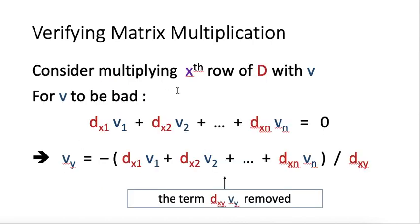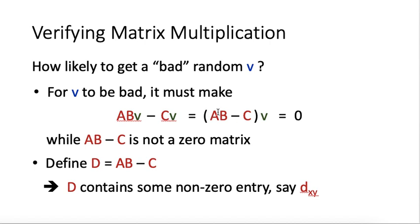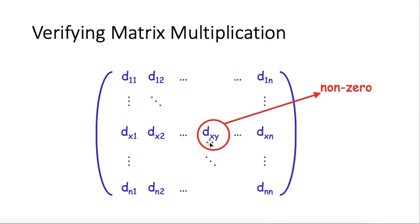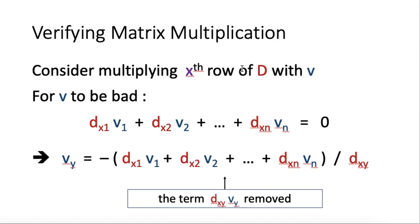Let us consider multiplying the X-row of D with V. We are looking at D times V. In particular, each row of D when multiplied by V has to be equal to 0, because D times V is equal to 0. We are going to look at the X-row of D. We multiply the X-row of D with V, and for V to be bad, the result of this row of D with V must be equal to 0.